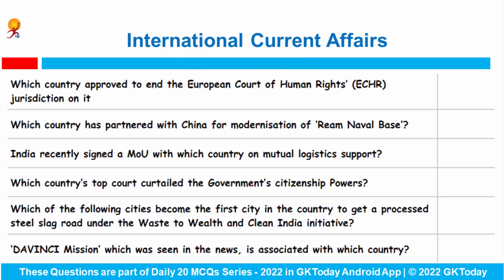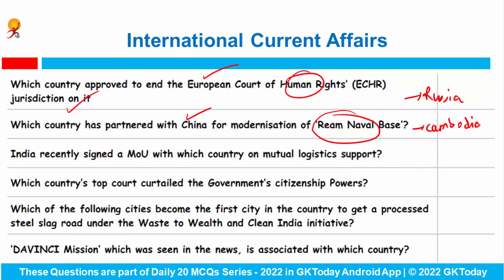Now we move to the revision section. International current affairs: Which country approved ending the European Court of Human Rights jurisdiction on it? Russia's Parliament approved a bill removing the European Court of Human Rights jurisdiction from the country. Which country has partnered with China for modernisation of Ream naval base? Cambodia has entered this partnership with China so that their Ream naval base can be modernised to accommodate ships of up to 5,000 tons displacement. Cambodia denied allowing China a military presence, but the US and other countries are concerned China will use it as a naval outpost on the Gulf of Thailand. This follows China's earlier security deal with the Solomon Islands.